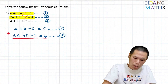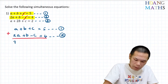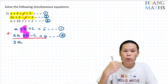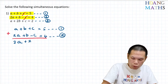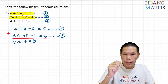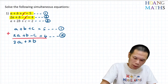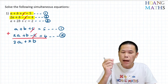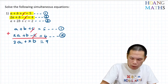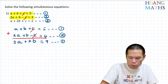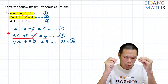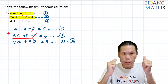Adding them up: a plus 2a gives 3a, and b plus b gives 2b. The positive c and negative c cancel out to zero. Five plus four gives nine. So we get 3a plus 2b equals nine. This is the result of equation one plus equation two, and now c is gone.